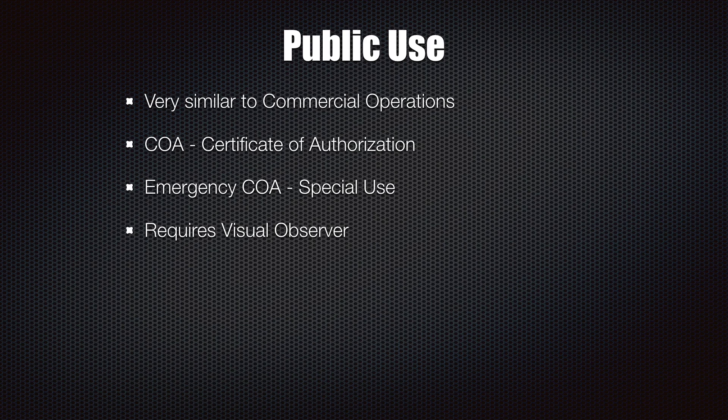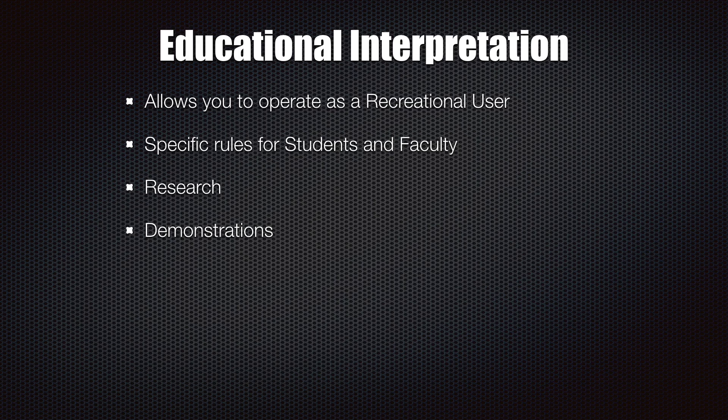For public use, you have to have a visual observer — basically somebody scanning the sky who is in direct communication with the pilot in command, watching for hazards and manned aircraft. There is also a category called the educational interpretation, which is an FAA interpretation that says if you're a student, faculty, or staff member doing research or a course and you want to demonstrate the use of a UAS, the FAA will allow you to do that as a recreational user without a commercial or public use certificate. However, it is very strict, so if you're interested you need to read exactly who is and isn't allowed to do that.